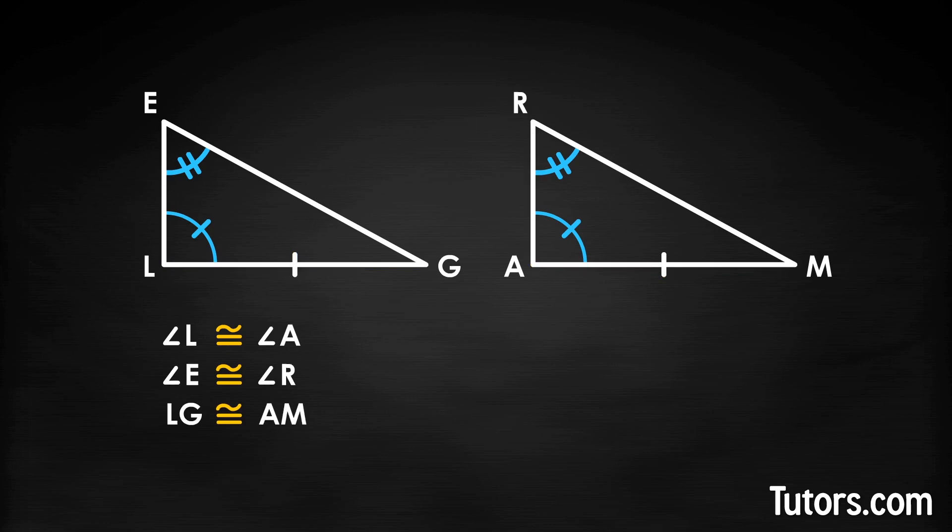Knowing the interior angles are congruent as listed, what else do we know? That's right, we know angle G is congruent to angle M because 180 degrees minus angle L minus angle E equals angle G and 180 degrees minus angle A minus angle R equals angle M. Therefore, angle G is congruent to angle M.